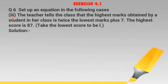Let us take the third case. The teacher tells the class that the highest marks obtained by a student in her class is twice the lowest marks plus 7. The highest score is 87. Take the lowest score to be L.